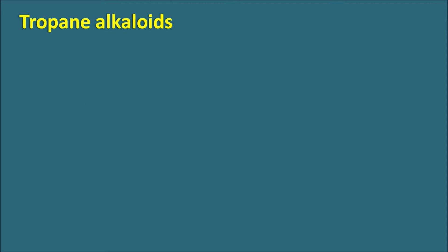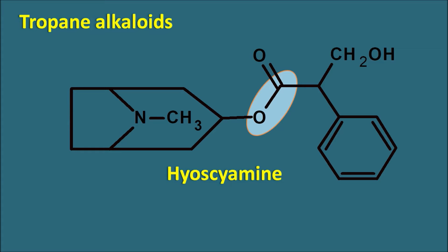An important tropane alkaloid is hyoscyamine, which has a large structure with a pyrrolidine-derived ring system. Hyoscyamine is an ester made up of an alcohol component called tropanol — which contains the pyrrolidine-derived tropane nucleus with a hydroxyl group at the third carbon — and an acid component called tropic acid (3-hydroxy-2-phenylpropanoic acid). The tropic acid is derived from phenylalanine, as it contains a phenyl and ethyl group. So tropane alkaloids are derived from two amino acids: ornithine and phenylalanine.